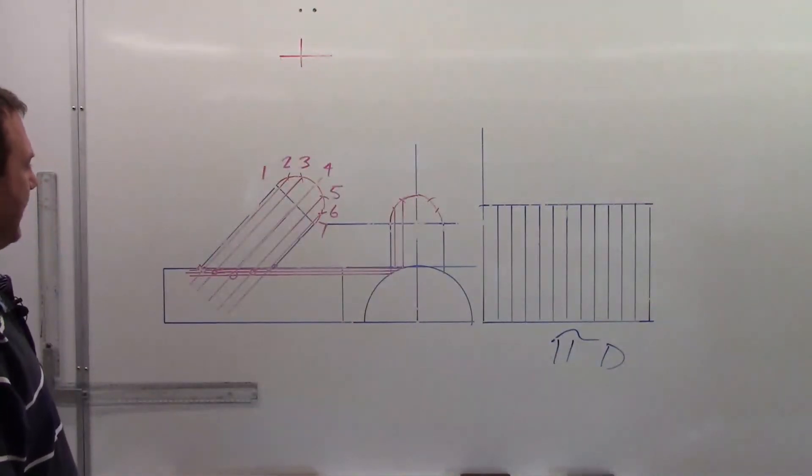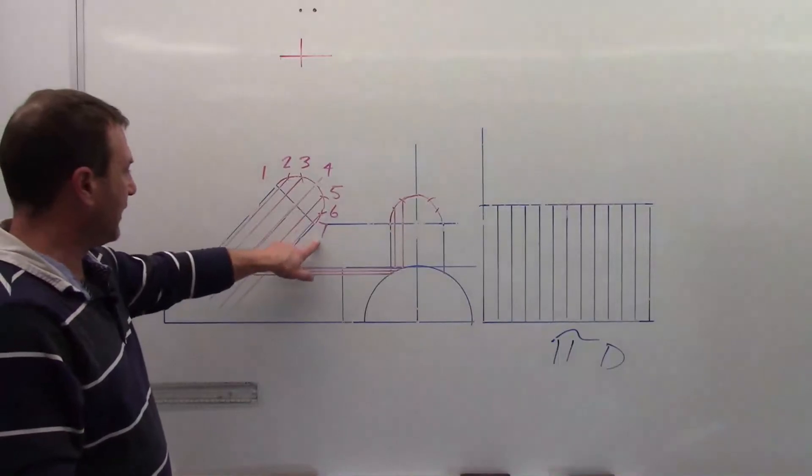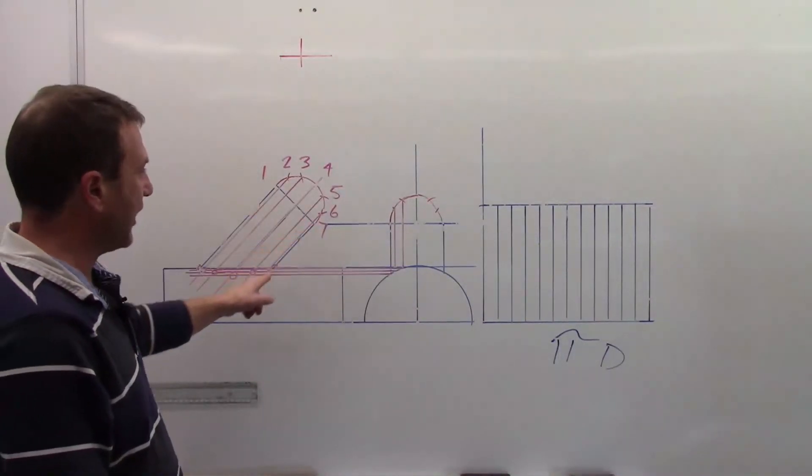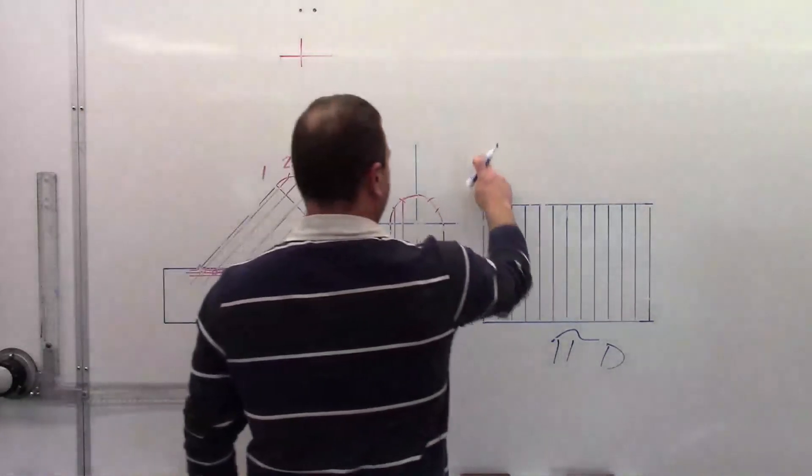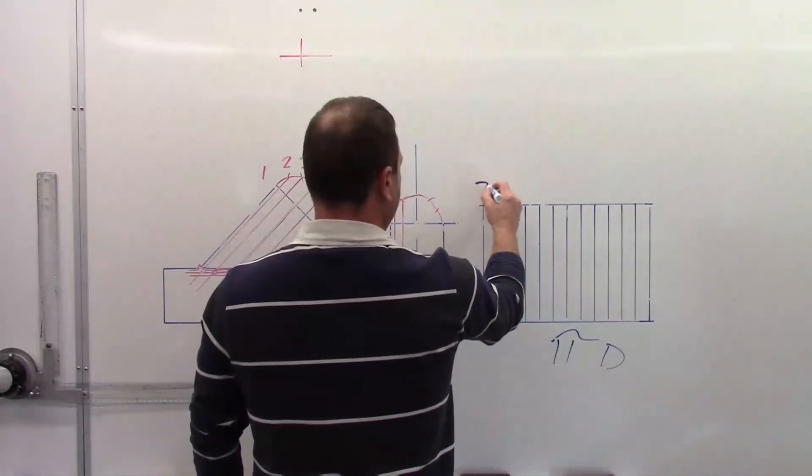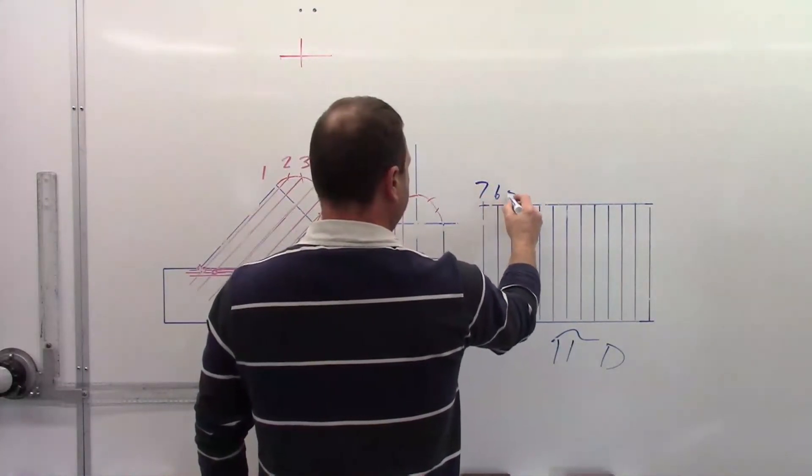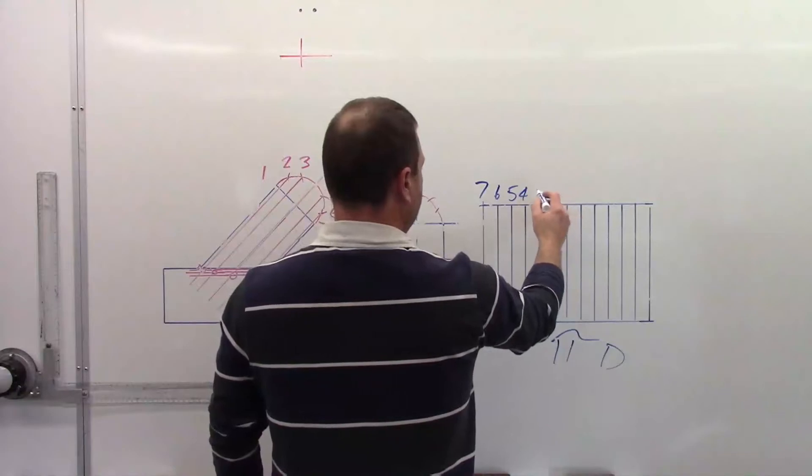And then we will go there, I am going to put my, in this case I am going to put my seam on the number seven because that is my shortest line. So we will pick our short line to go there. So I am going to label it seven, six, five, and down the number line.